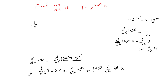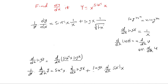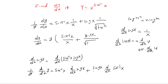So 1 by y into dy by dx equals sin inverse x into 1 by x plus log x into 1 by root of 1 minus x square. Therefore dy by dx equals y into sin inverse x by x plus log x by root of 1 minus x square, where y equals x to the power sin inverse x.